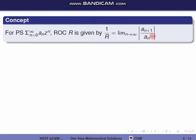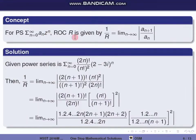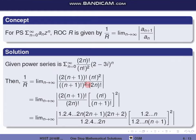Here a_n is the coefficient of z to the power n, and a_{n+1} is the coefficient of z to the power n+1. In this power series, a_n is (2n) factorial divided by (n factorial) squared, and a_{n+1} is (2(n+1)) factorial divided by ((n+1) factorial) squared. So 1 by r equals limit n tends to infinity of a_{n+1} divided by a_n.